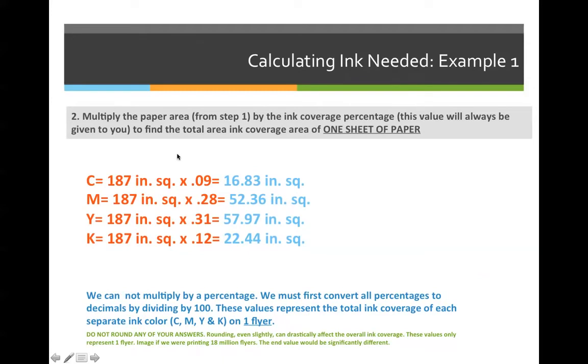Multiply the paper area from step one by the ink coverage percentage. This value will always be given to you. I gave it to you as 9%, 28%, 31%, and 12%. The correct answers should be: cyan, every one sheet of 11 by 17 inch paper has a cyan ink coverage of 16.83 inches squared, magenta is 52.36 inches squared, yellow is 57.97 inches squared, and black is 22.44 inches squared. I'd like to emphasize again that you do not round any values anywhere along the line until you get to the very end where you need to know how many pounds of ink coverage you need to purchase.